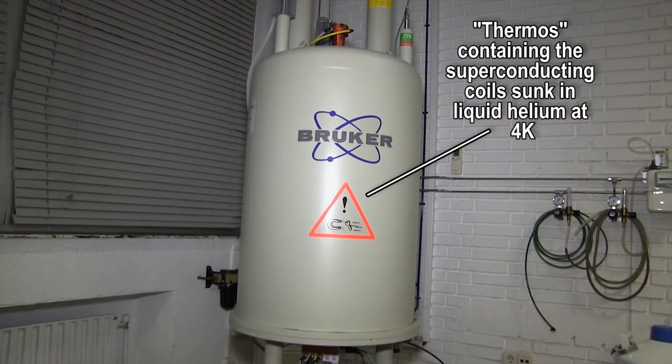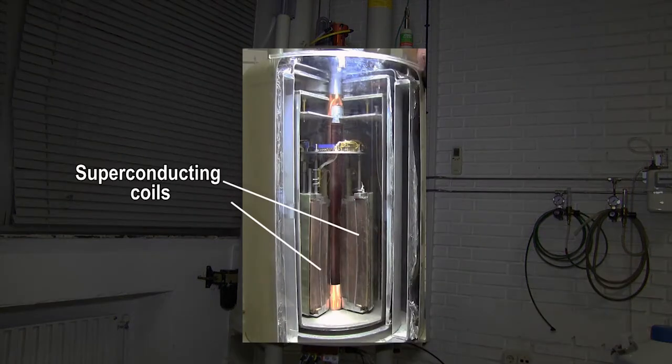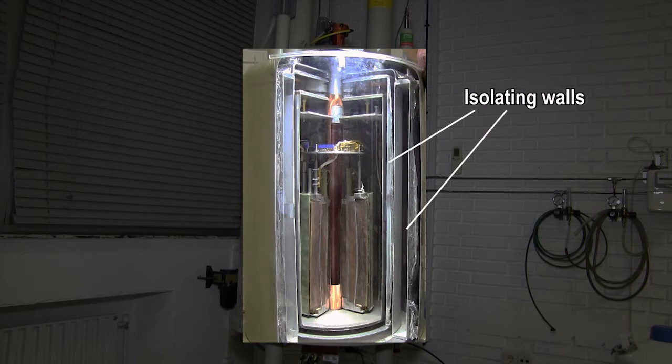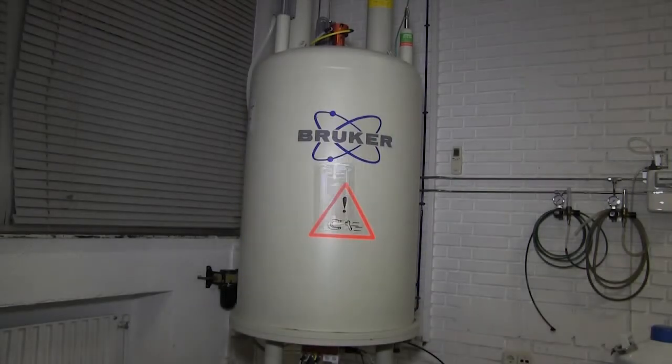The cylinder is actually a huge thermos containing the magnet coils that are sunk in liquid helium at 4 degrees Kelvin. The very low temperature is essential to make the coils be superconducting and thus get the strong magnetic field.